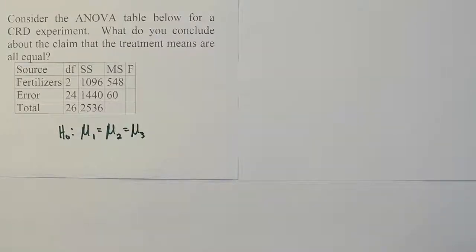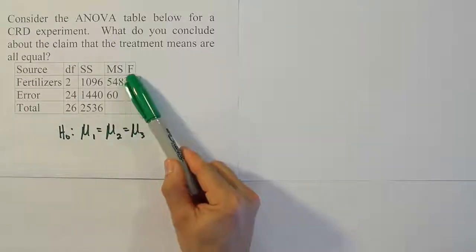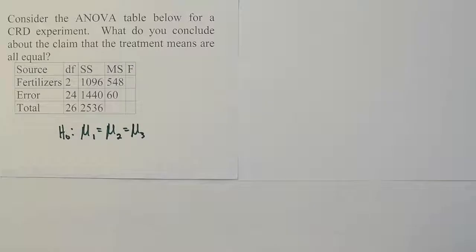Or at least one differs from the rest significantly. So what we want to do now at this point is to fill in the F test statistic and then compare it to a critical value. That's all we need to do. We need to know what this F test statistic is and then compare it to a critical value to determine if we should reject that H0 or not.